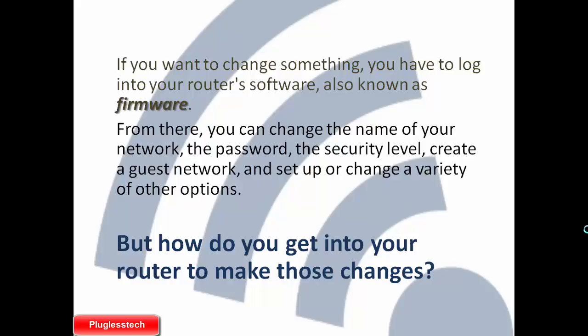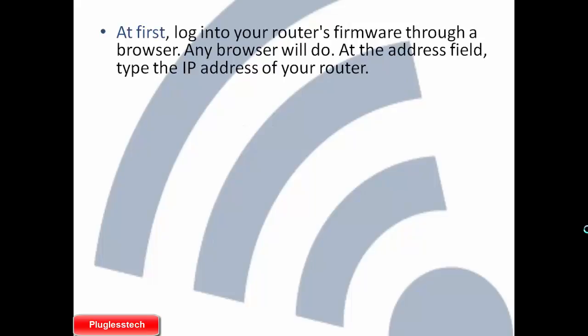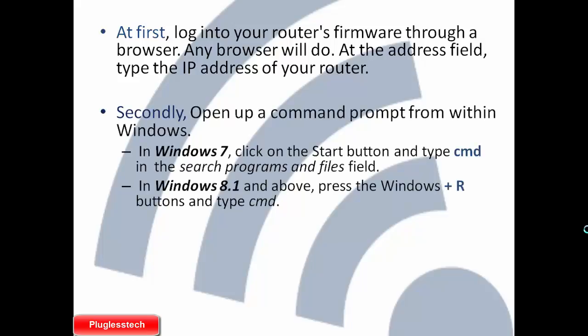To make those changes, first log into your router's firmware through a browser — any browser will do. At the address field, type the IP address of your router. To find it, open up a command prompt from within Windows. In Windows 7, click the Start button and type cmd in the search field. In Windows 8.1 and above, press the Windows plus R buttons and type cmd.